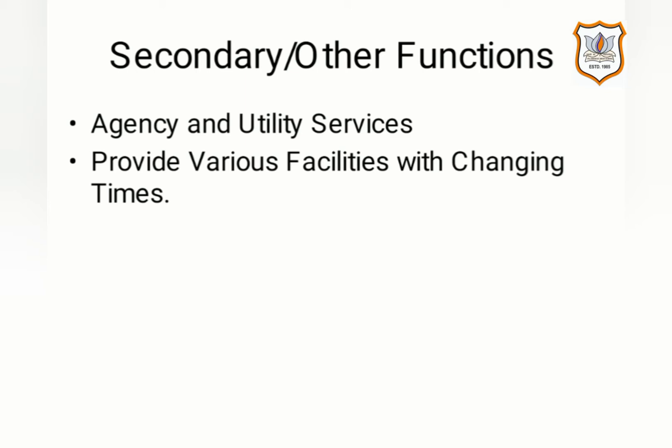The first secondary function is agency and utility services. A bank provides various utility and agent banking facilities to its customers. For example, a bank provides a letter of credit to the exporter on behalf of the importer, and also provides underwriting services to various businesses.